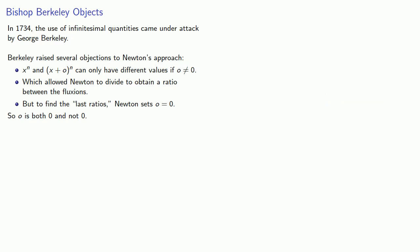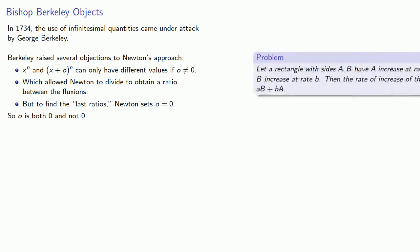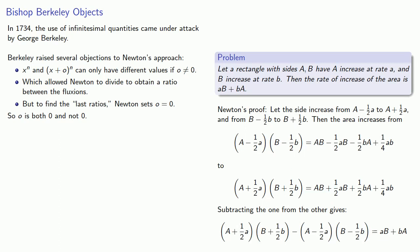How about the argument from the Principia? Barclay pointed out that the argument in the Principia is clearly tailored to make the rate of change come out correctly. Newton knows he wants the answer ab plus ba, and so he specifically chose this increase from a minus a half a to a plus a half a and from b minus a half b to b plus a half b. But this is wrong.